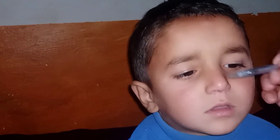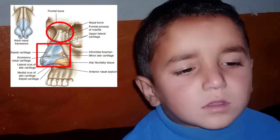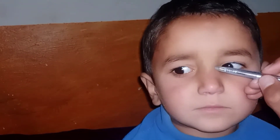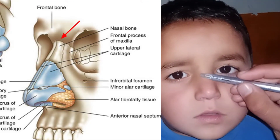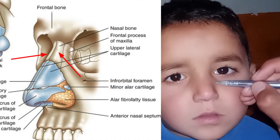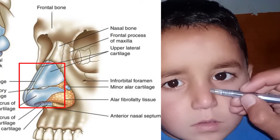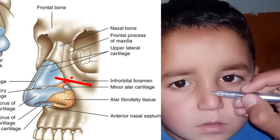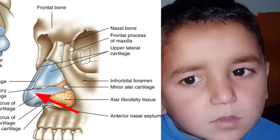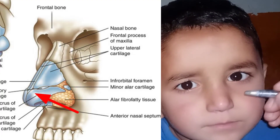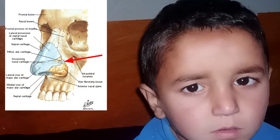The nose is primarily made of bones and cartilages. The upper part of the nose is made of bones and the lower part is made of cartilages. The upper part is mainly made of the frontal bone, two nasal bones, and the frontal process of the maxilla. The lower part is mainly made of cartilages: one is the upper lateral nasal cartilage, the other is the lower lateral nasal cartilage which is also called the major alar cartilage, and there are also minor alar cartilages.